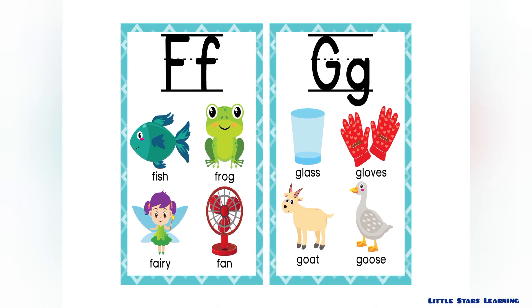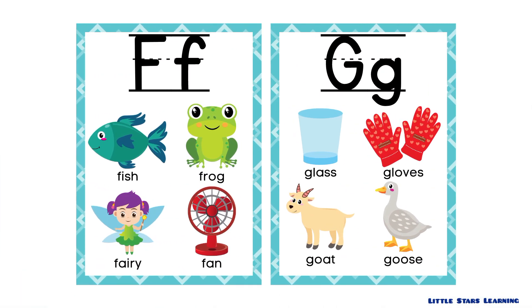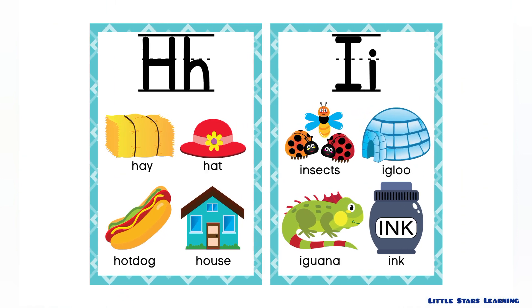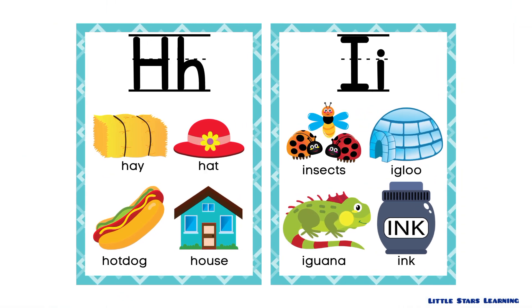F is for fish, frog, fairy, and friend. G is for glass, gloves, goat, and goose. H is for...